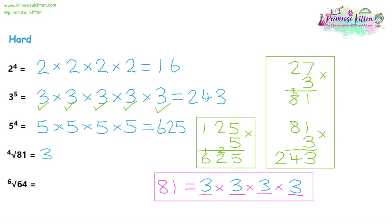For the final question, we want six numbers which multiply together to make 64. Multiplying four threes together already gives 81, which is larger than 64, so three is too big. Multiplying by one just keeps the number the same, so the answer must be two. Checking: two times two is four, four times two is eight, eight times two is 16, 16 times two is 32, and 32 times two is 64. Counting up six twos on my fingers confirms the answer is two.